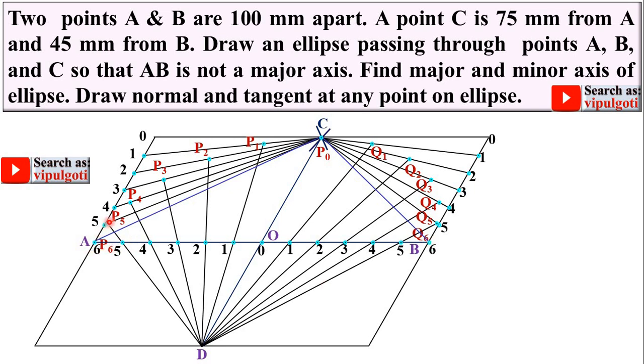Now join all these points by smooth curves. So it is your half ellipse. But we have to complete the ellipse over here also, and so you have to repeat the same step on the bottom portion of this AB, but that will consume much more time, so I am going to show you here the shortcut method.